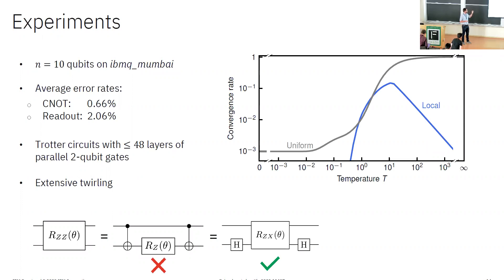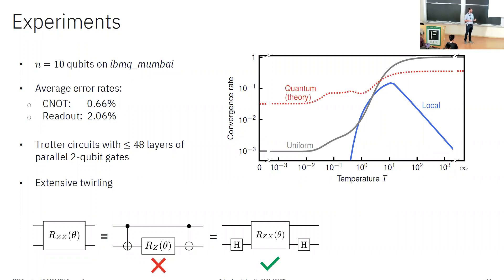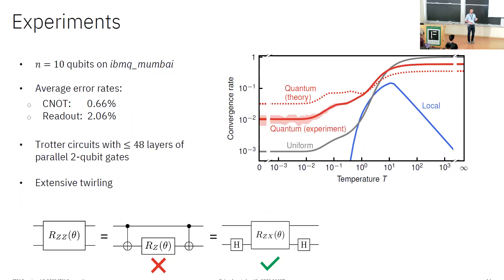To show how this plays out, I'll plot convergence rate versus temperature for an illustrative model instance on 10 spins. Showing again the two extreme classical strategies, the ideal version of our quantum algorithm gives us the red dotted line, whereas the experimental implementation gives us the solid red line, which in the low-T glassy regime is slower than the noiseless case but still substantially faster than both of these classical algorithms as well as about half a dozen other more sophisticated MCMC algorithms I haven't covered here.